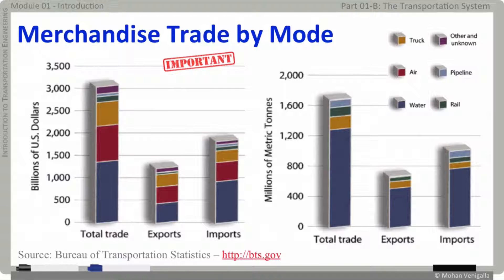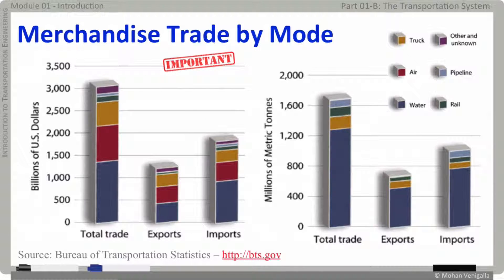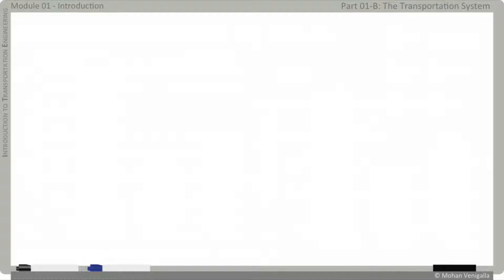This chart shows the relative ranking of modes for freight — on the left in dollar terms, on the right in tonnage. In dollar terms, water transportation has the highest share of trade in both exports and imports, followed by air transport at number two and truck at number three. In tonnage terms, water transportation still leads, followed by truck at number two and rail at number three. Air transportation barely registers in tonnage terms.